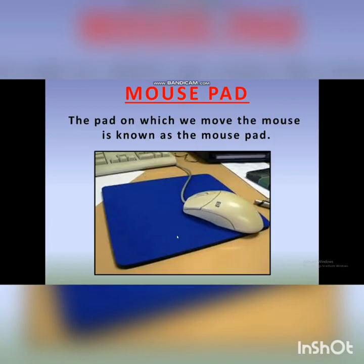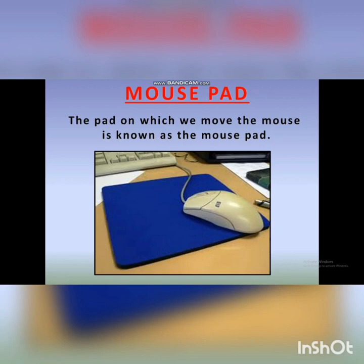Mouse pad. The pad on which we move the mouse is known as a mouse pad. Children, when we connect the mouse to the CPU and keep it on the mouse pad — it is like a soft cushion — the movement of the mouse and the cursor is very smooth. So try to use the mouse pad when you are operating the mouse.